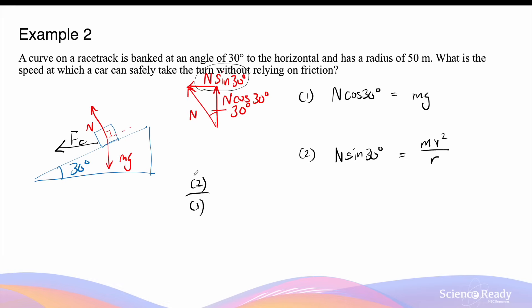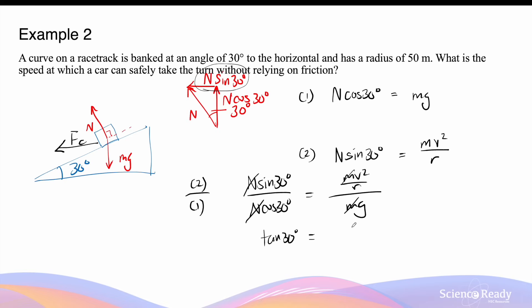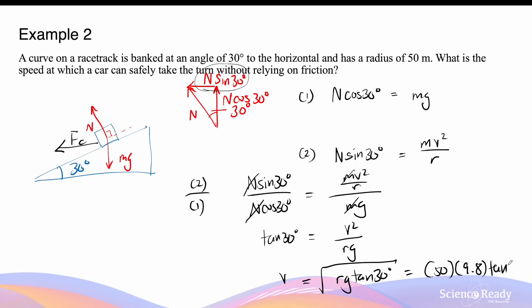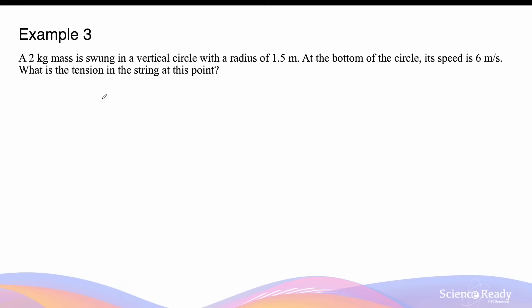Dividing the second equation by the first: n sin 30° divided by n cos 30° equals (mv² over r) divided by mg. The normal force and mass cancel, giving tan 30° equals v² over rg. This gives the expression for speed: v equals the square root of rg tan 30°. Substituting r equals 50 meters and g equals 9.8, and multiplying by tan 30°, gives a speed of 16.8 meters per second.